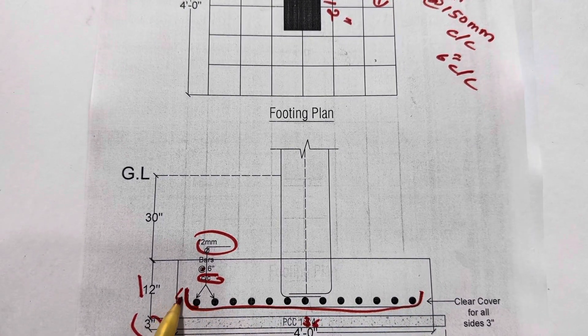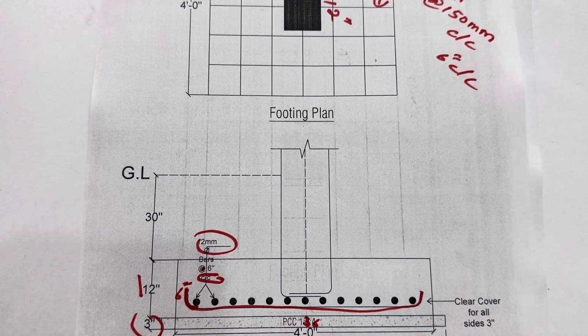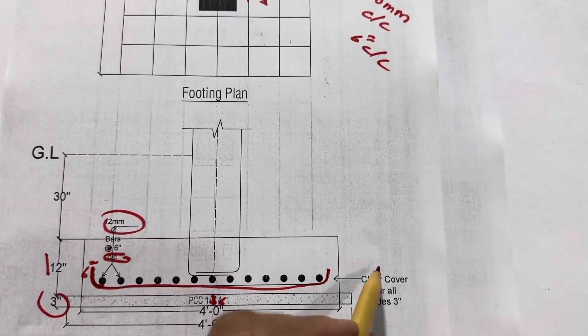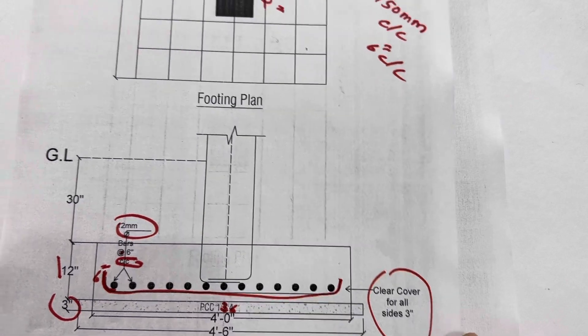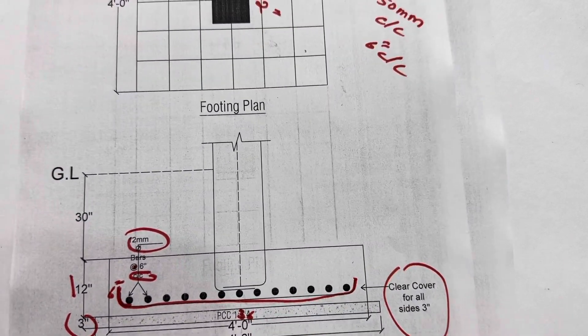So the hook should not be less than 6 inches. Next, you can see concrete cover is for all sides 3 inches. This is very important. If you don't provide the concrete cover, you will face more problems.